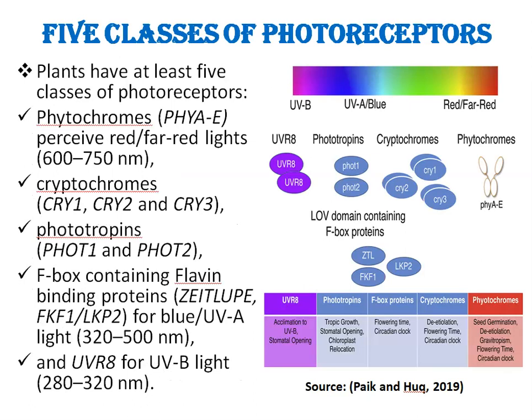Now, different classes of photoreceptors in plants. Plants have at least five classes of photoreceptors to acquire detailed information from different portions of incoming light. These five classes, as you can see in this figure, are: phytochromes, cryptochromes, phototropins, F-box proteins, and UVR-8.